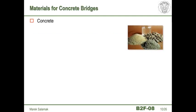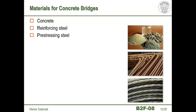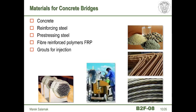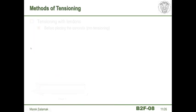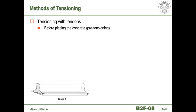We use the following basic materials to construct pre-stressed concrete bridges: first, concrete; then reinforcing steel; pre-stressing steel; sometimes fiber-reinforced polymers called FRP; and finally grouts for injection. Here we have the basic methods of tensioning. We can stress with tendons, and there are two primary techniques: before placing the concrete — pretensioning — and after the concrete has been laid and hardened — post-tensioning.